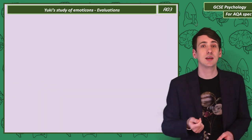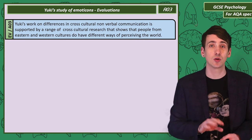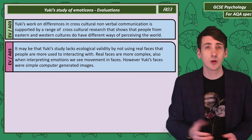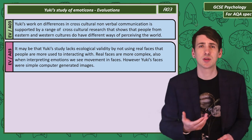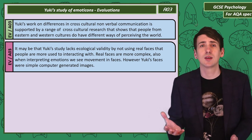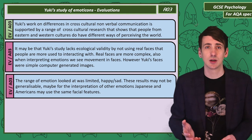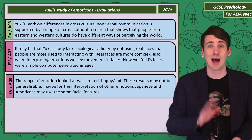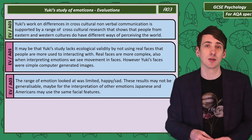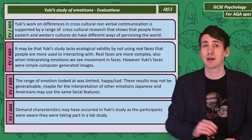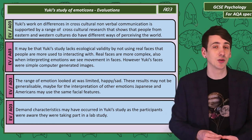Evaluating Yuki: the cross-cultural variations in perceiving body language match other research showing cultural variations in perception. However, to criticise the study, it lacks validity — it used emoji rather than real human faces, which we are more accustomed to interpreting. Human faces are more complex and often moving. The emotional range was also limited; there may only be cultural variation in interpreting happy and sad faces. We also need to consider demand characteristics, as participants were aware they were in a lab study and may have guessed the aims and altered their behaviour.